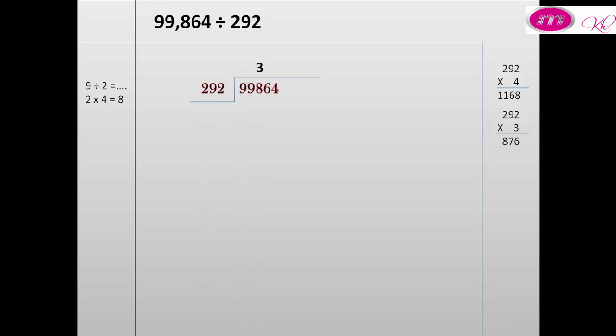We put 3 above 8, the last digit of the group we took on the right. 3 by 292 equals 876. 998 minus 876 equals 122. 122 is less than 292.